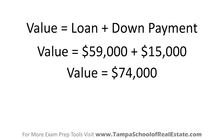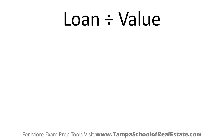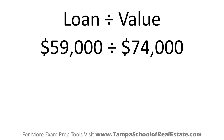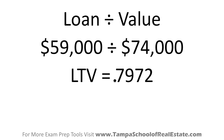Now that we have that, we can go back to our loan to value formula. We have the loan amount from the question — $59,000 — and we're going to divide that by the value we just figured out, which is $74,000. When you do that calculation, you'll end up with 0.7972.